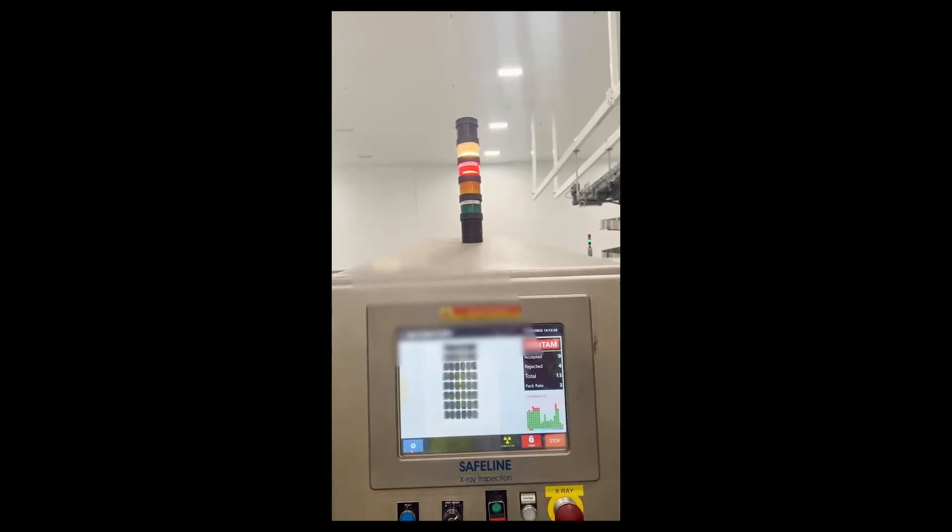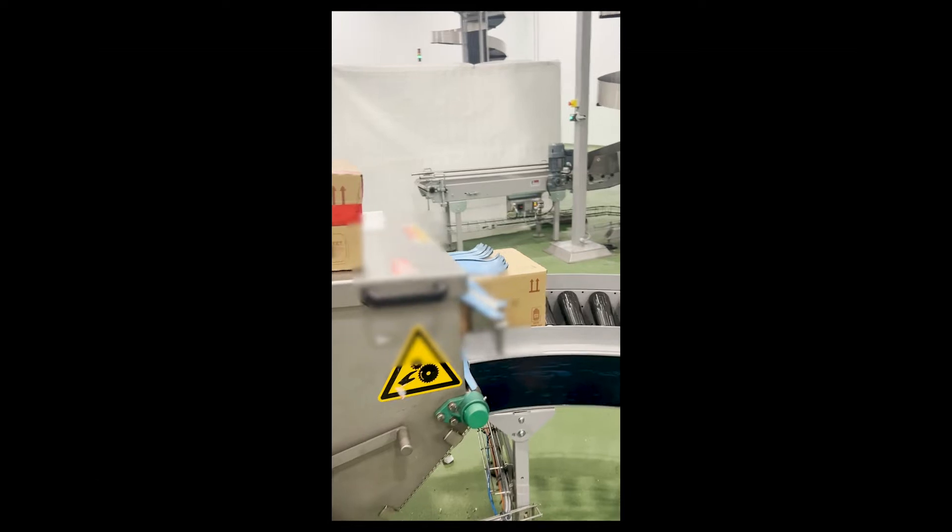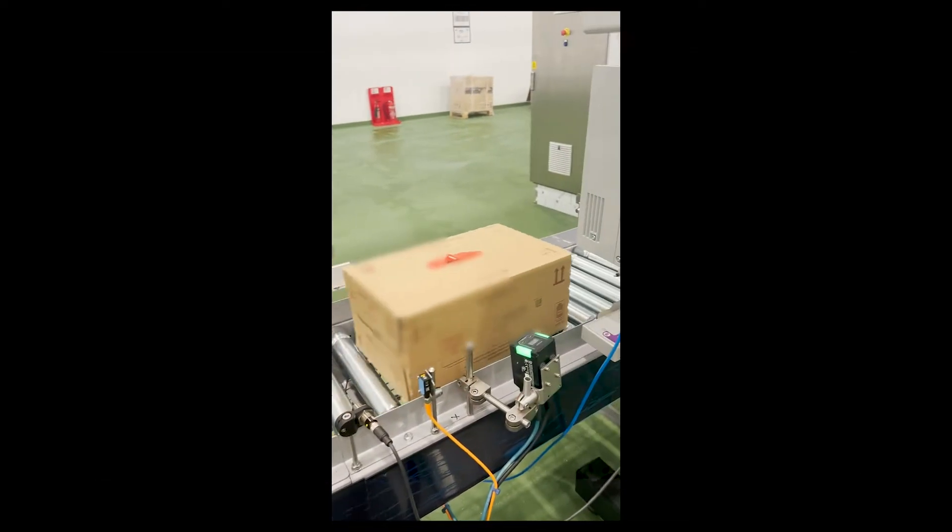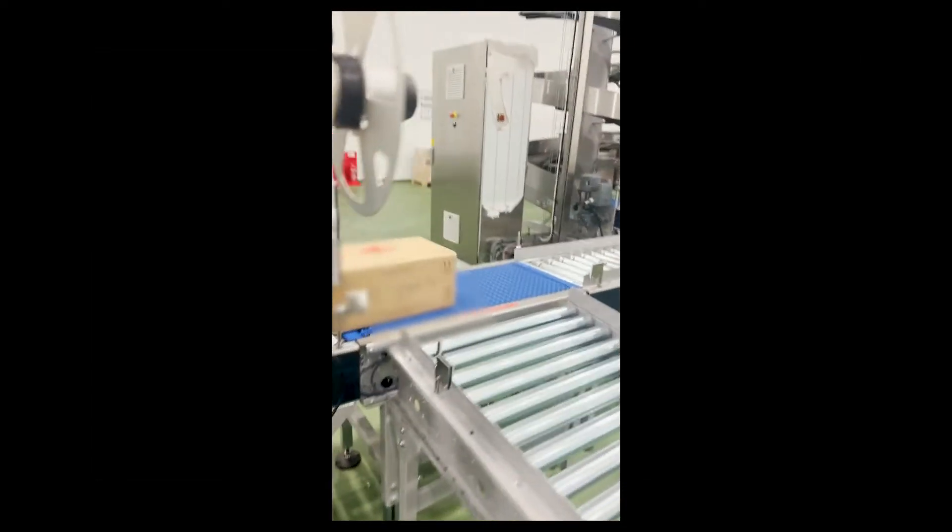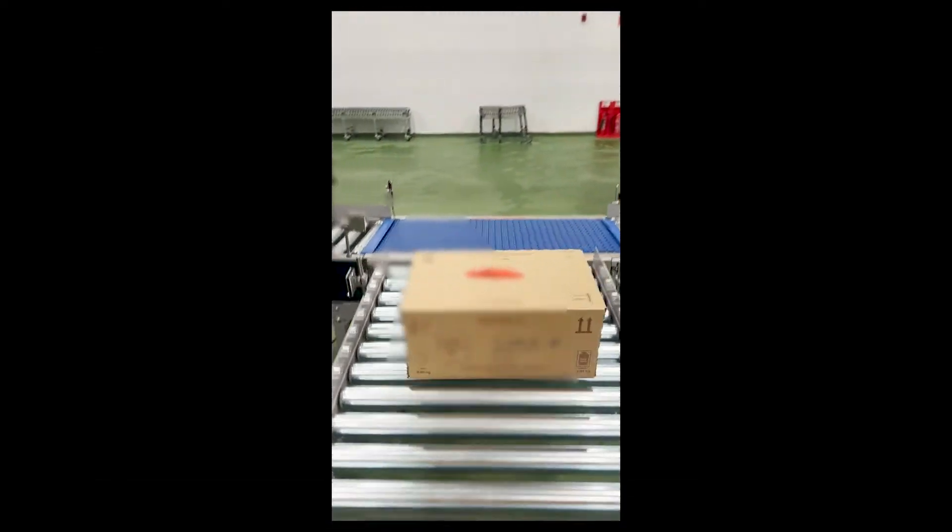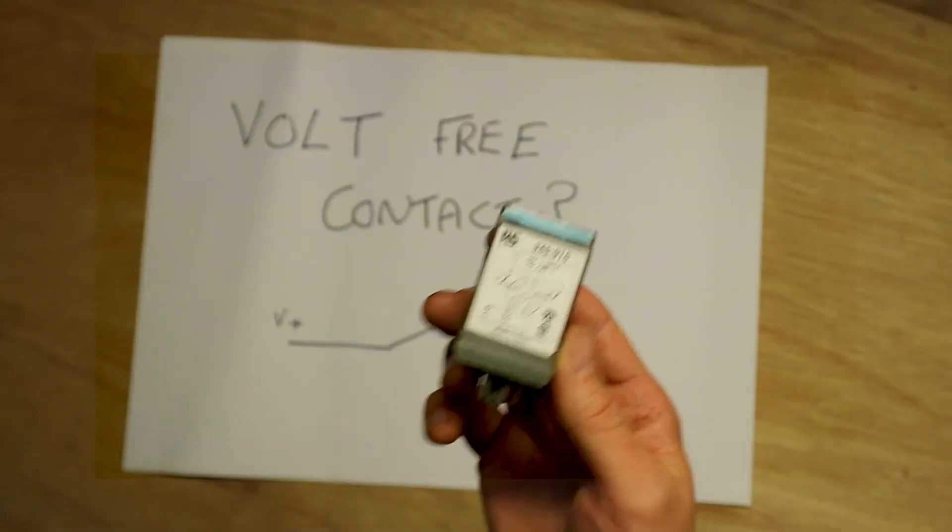We wanted a signal coming from an x-ray reject going back to our line control panel, so we knew if the x-ray had triggered, we could reject it on our reject conveyor that we were installing a little bit further down.